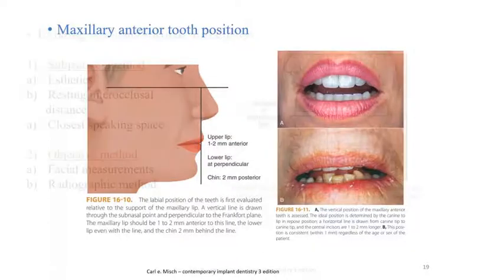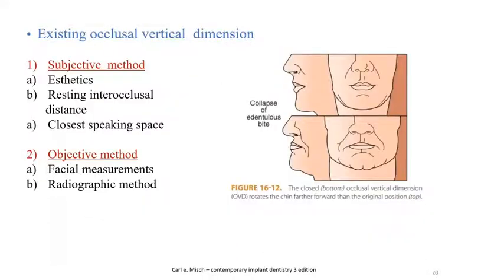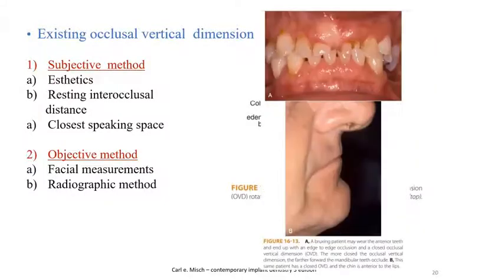We then assess the existing occlusal vertical dimension using different methods. Subjective methods include aesthetic assessment, resting occlusal distance, and closest speaking space. Objective methods include facial measurement and the radiographic method.